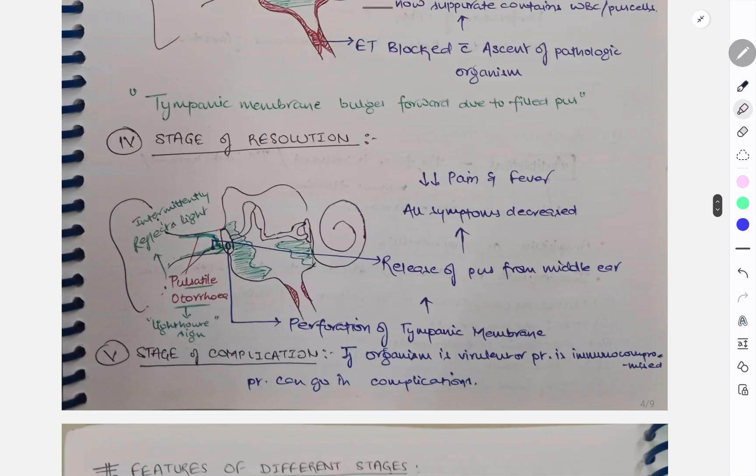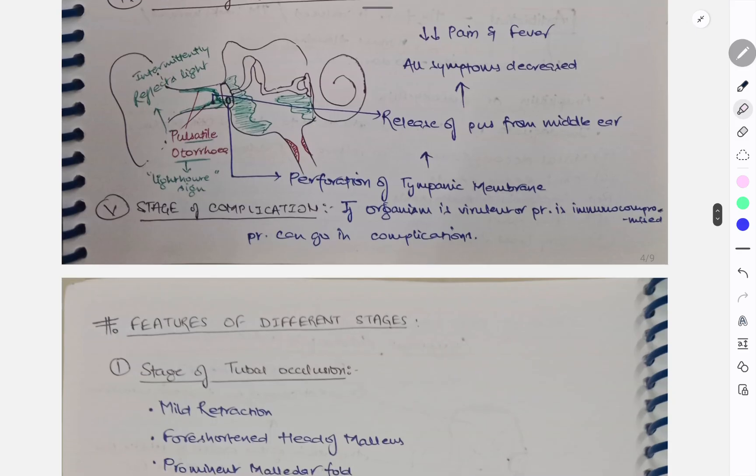The next stage and the last stage, or you can say stage of resolution. Stage of resolution - what happens? There is perforation of tympanic membrane and the release of pus from the middle ear. The pattern of release of pus is like it will come out and then after some time it will pause and then again it will come out. That's why we call it pulsatile otorrhea. So if we put a light on this it will be intermittent reflection of the light. Therefore we call it the lighthouse sign. So in this stage when there is perforation of tympanic membrane, all the pus from the middle ear is released. So the symptoms will decrease. So the patient may present with decreased pain and fever. The last stage is stage of complication, if present. If the organism is virulent or the patient is immunocompromised, patient can go into complications.